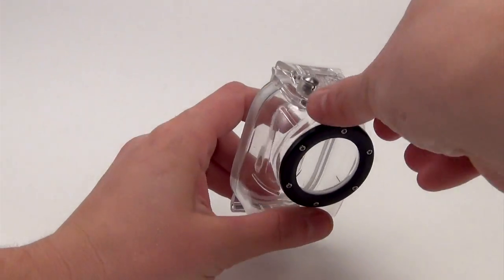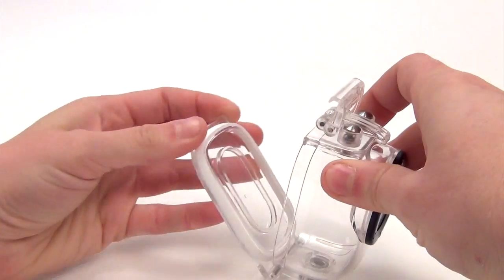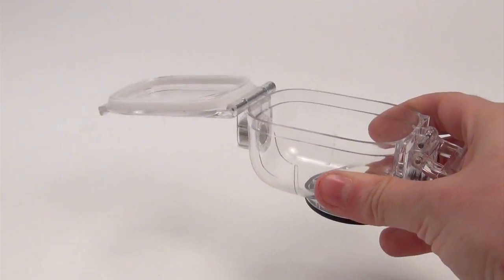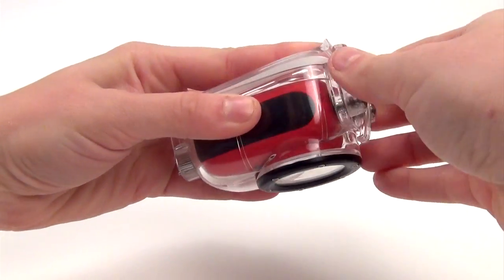Another versatile accessory, which is sold separately, is our waterproof housing. To open the housing, gently pull the latch from the front and the hook will release. Open the back and place your Ego inside the housing with the camera lens facing forward.